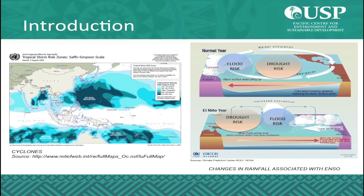Strong cyclones are commonly observed in the Pacific, south and north, except for a band between 5 degrees south and 5 degrees north, as you can see on the map here on the left hand side — the strong cyclones areas are the dark blue areas. The Pacific Islands also suffer from floods and droughts. The distribution of drought, floods and cyclones is partly controlled by the ENSO phenomenon.